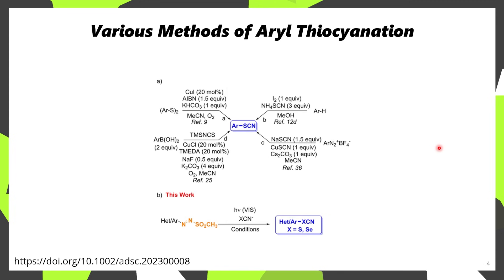However, in the case of aryl thiocyanates, the synthesis can be less straightforward. In most instances, you'll be looking to just buy a building block with an existing thiocyanate, as there are lots of these that are available. However, if you're looking to scale up and you need more than a gram or so, you'll probably want to be making it yourself.